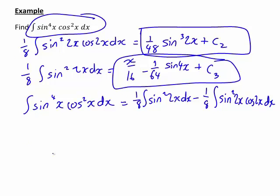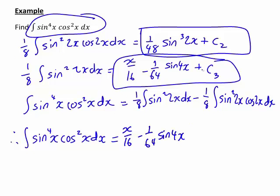So therefore, finally, putting it all together, the original integral we were looking for, which was the integral of sin to the 4x cos squared x dx is simply going to be this one. So x on sixteen minus one on sixty-four sin 4x. We'll just leave that constant alone for the moment. Come back to that.